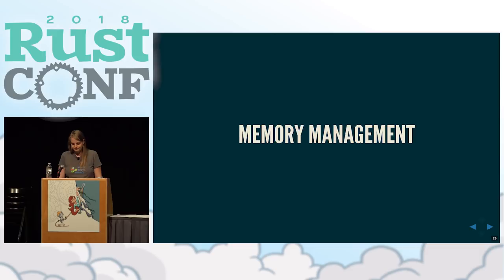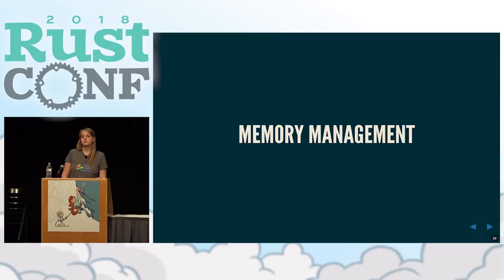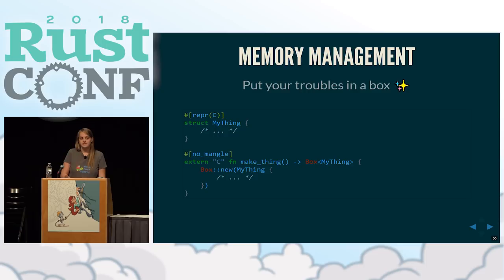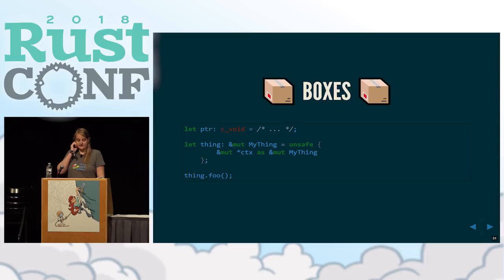Let's talk about memory management — the thing that Rust doesn't really need you to handle. By default when you create an object in Rust, it creates it on the stack, which is convenient if you don't need it on the heap. But especially when we talk to some other piece of code where we have no idea what it's doing to the stack, it's not a great idea to use the stack as permanent data storage. So put your troubles in a box. Box is a heap-allocated pointer in the standard library, and whatever you put inside it will be on the heap. The extern C box thing returns a pointer to whatever you put in memory.